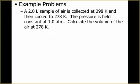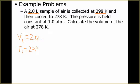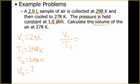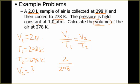Here's an example that uses Charles' Law. We have a 2-liter sample of air, so V1 equals 2 liters. It's collected at 298 K, so that's T1. Then it's cooled to 278 K, so that's T2. The pressure is held constant, so since it's constant it does not need to be in our equation. We want to know what is the new volume at our new temperature, so V2 is what we're solving for. We'll set this up as V1 over T1 equals V2 over T2. Since the temperatures are already given in Kelvin, we don't need to convert.